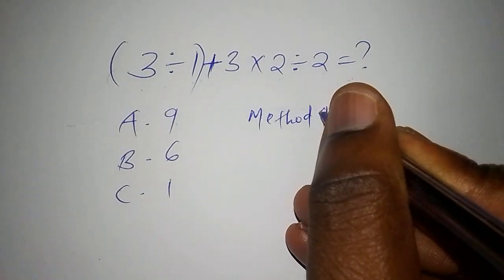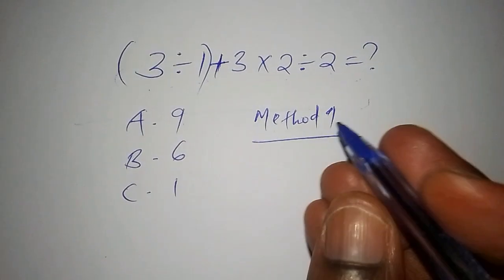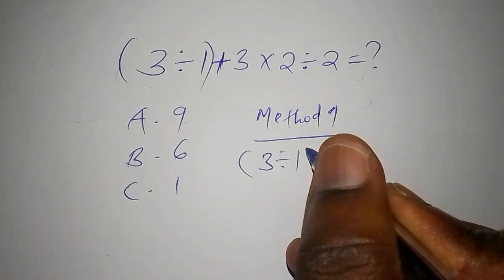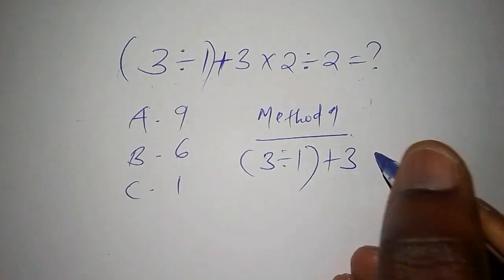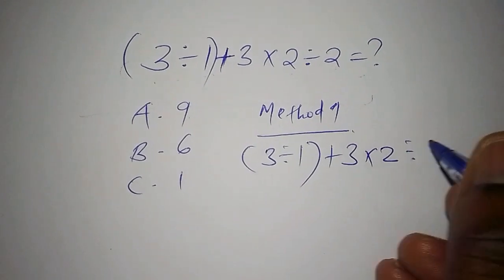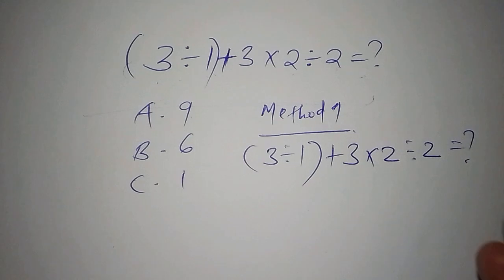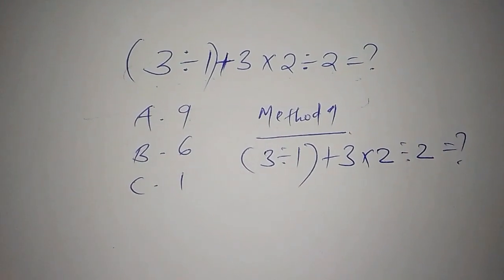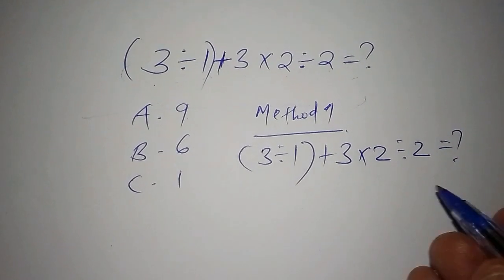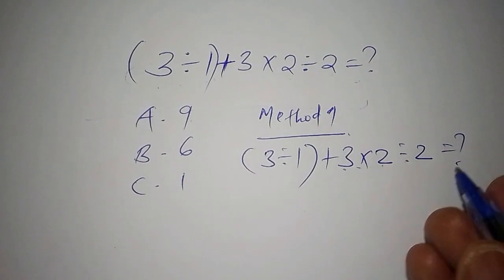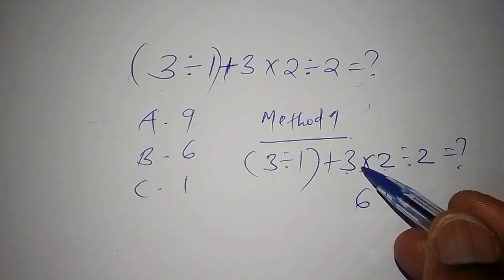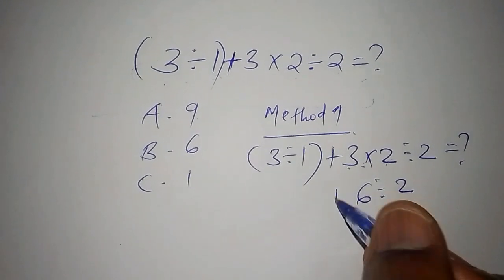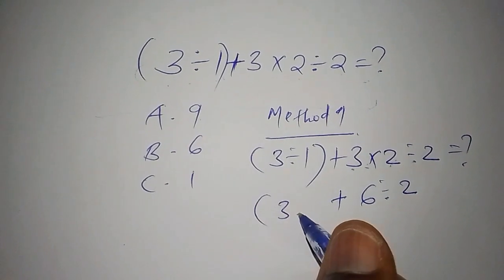The first method that was used was Method 1. The question was (3÷1)+3×2÷2=? So what is the answer? Method 1 was done this way: it was 3×2 which was 6, then from there 6÷2.